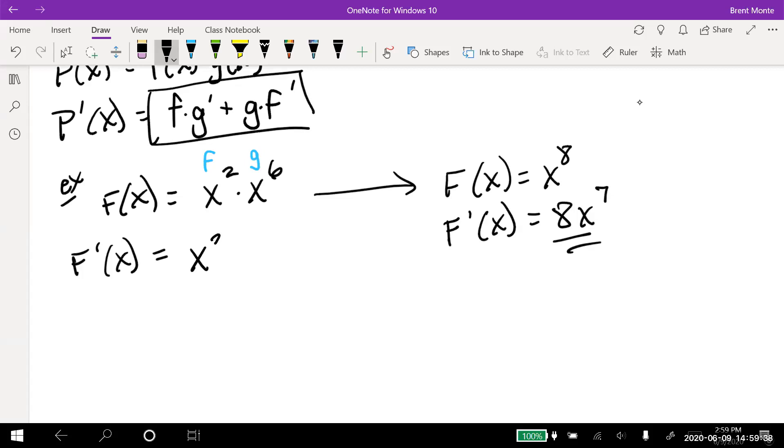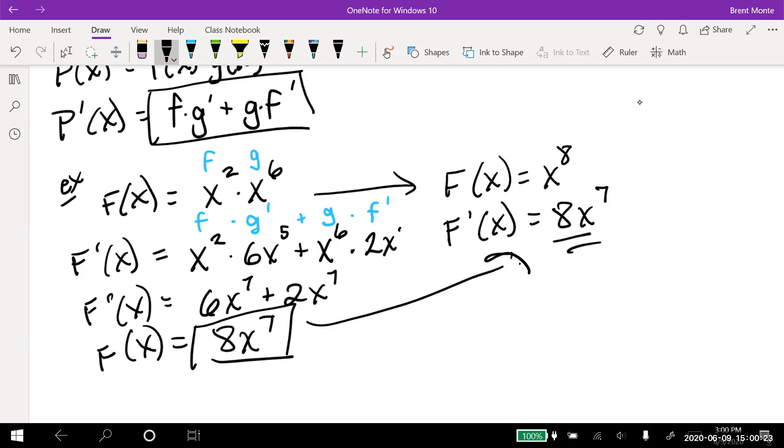When I take the derivative, it's the first x² times the derivative of the second, 6x⁵, plus the second x⁶ times the derivative of the first, 2x. So think what I did. This was the first times the derivative of the second plus the second times the derivative of the first. And notice when I clean this up a little bit, I'm going to get 6x⁷ plus 2x⁷, which equals 8x⁷, which is what we said the right answer was. So I see, okay, this product rule did actually work.